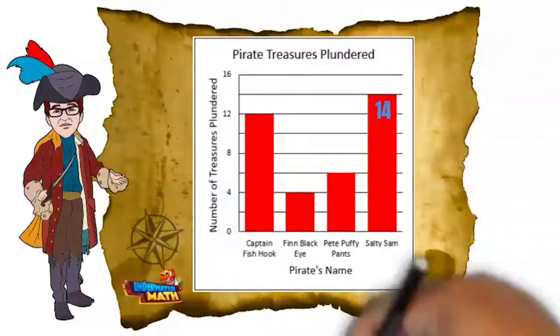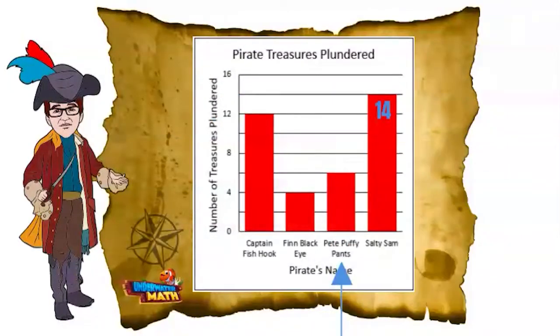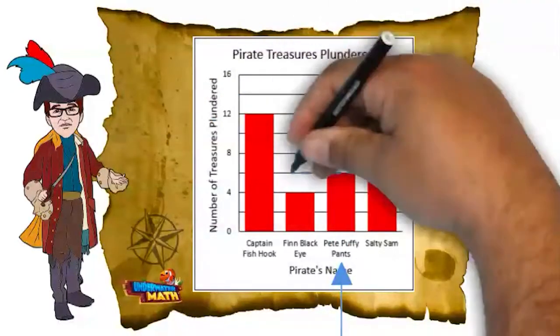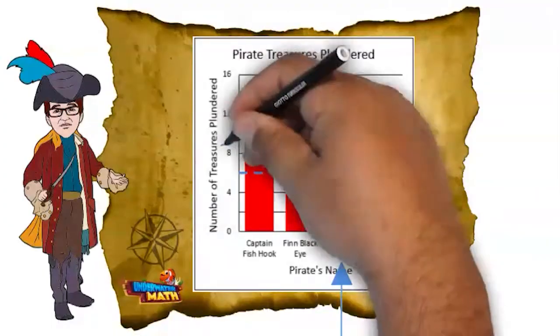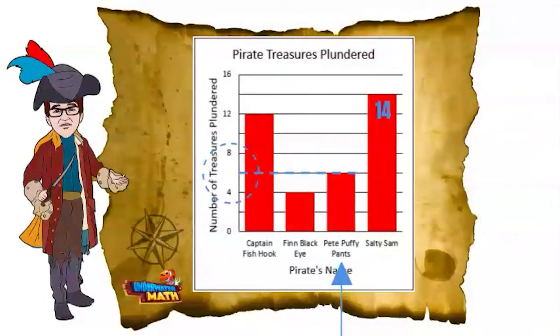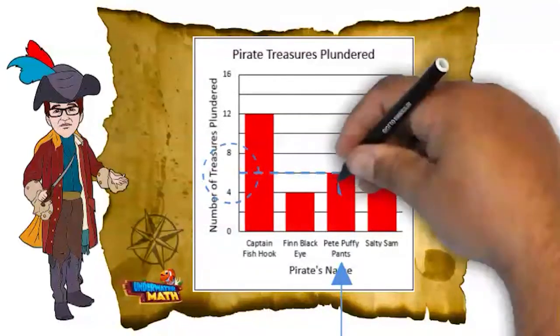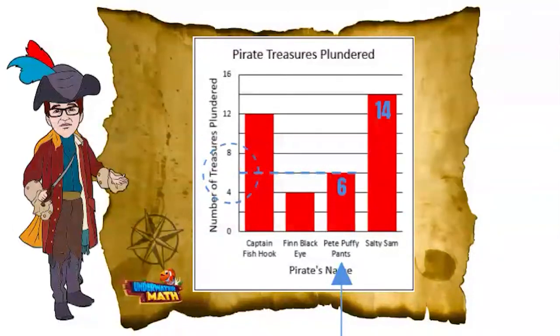Look at the bar for Pete Puffy Pants. It goes to the line halfway between the 4 and the 8. What number is halfway between 4 and 8? It's 6. So Pete Puffy Pants plundered 6 treasures.